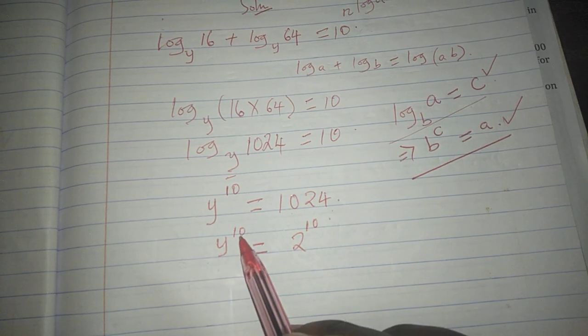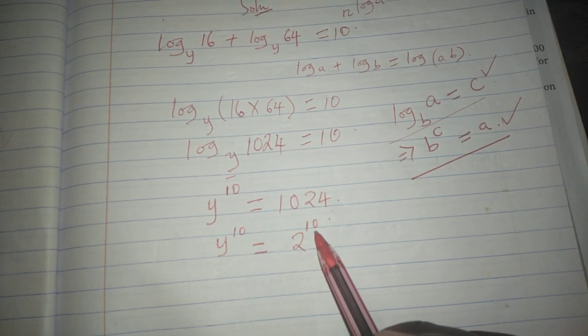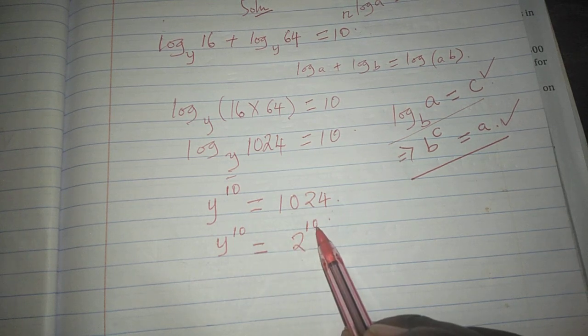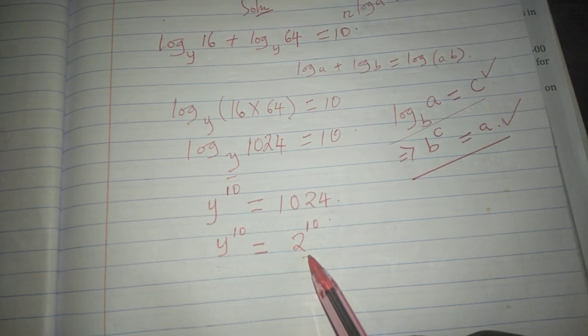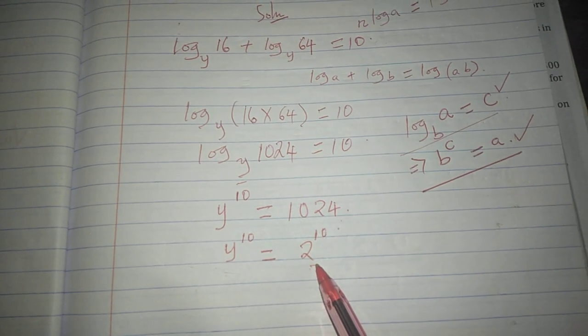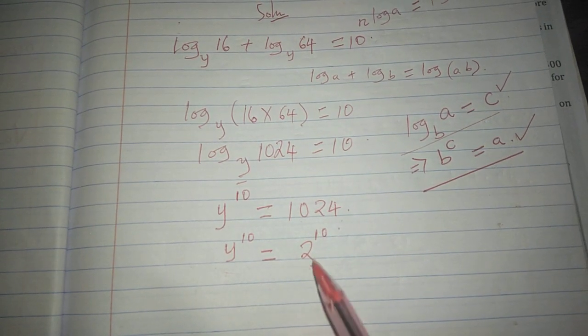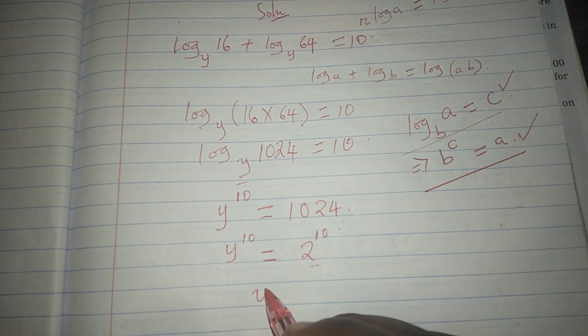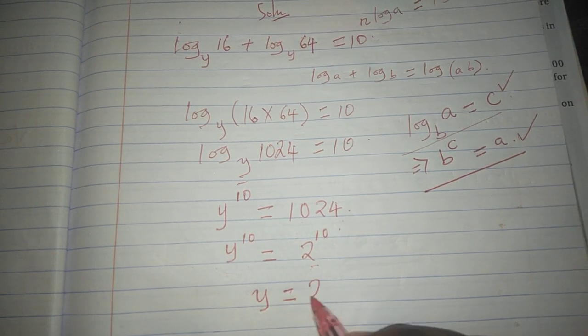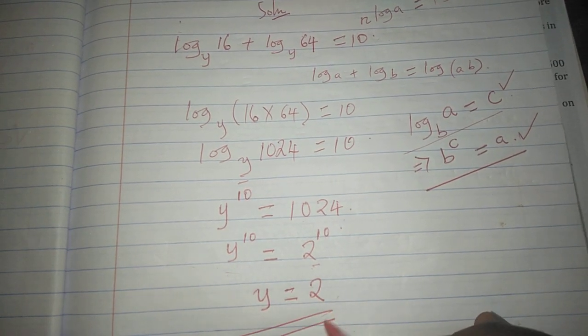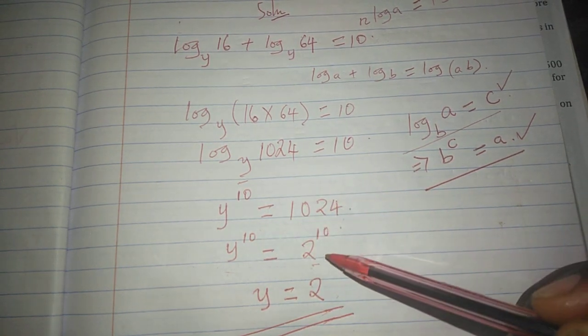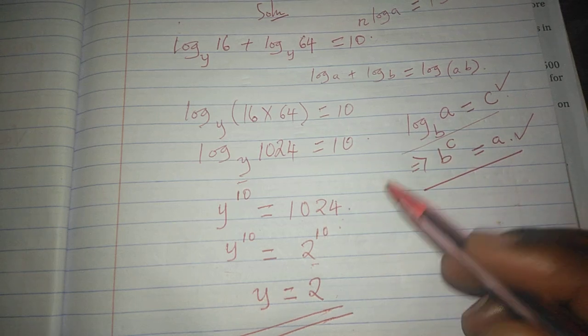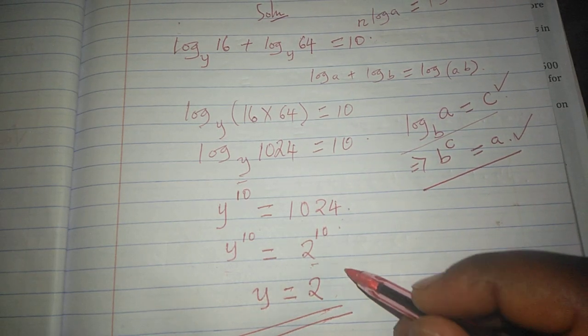If y raised to power 10 equals to 2 raised to power 10, since these indices are the same, then it means the bases are also the same, since they are being raised to the same index and are being equated. So this means that y equals to 2. Because when we raise y to power 10, we are getting what we get after raising 2 to power 10. So the answer is 2.